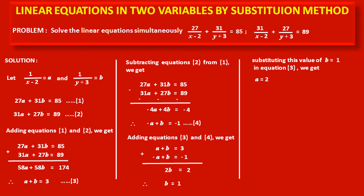Now, a is our assumed variable, and its original value is 1/(x-2). So 1/(x-2) = 2. By cross multiplication: 1 = 2(x-2), which gives 1 = 2x - 4. Solving this, we get x = 5/2. This is the value of the first original variable x.